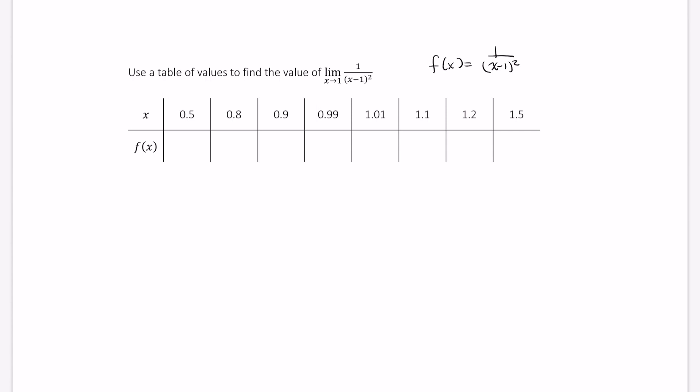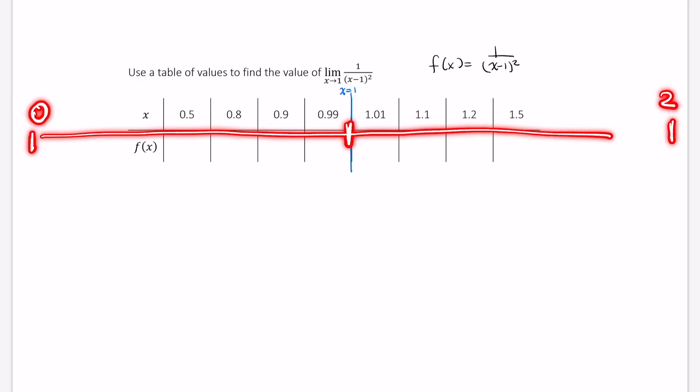So where is x equals 1? x equals 1 is right here. I should put that on top. It's right there. Here, if you look at this as a standard number line, this would be 0 over here, and here's 1. And then number 2 would be over here somewhere.